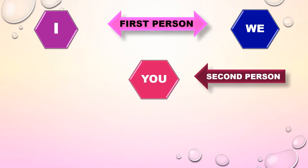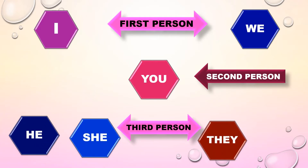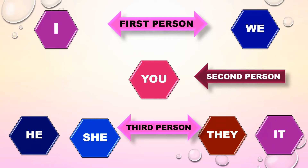The pronoun you, which denotes the person or persons spoken to, is said to be a personal pronoun of the second person. You is used both in the singular and plural. The pronouns he, she, and they, which denote the person or persons spoken of, are said to be personal pronouns of the third person.